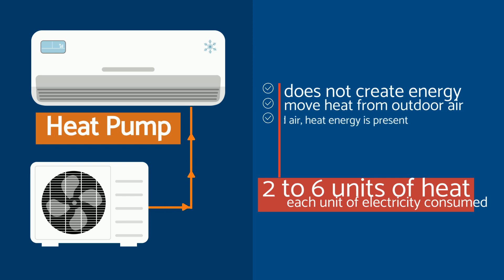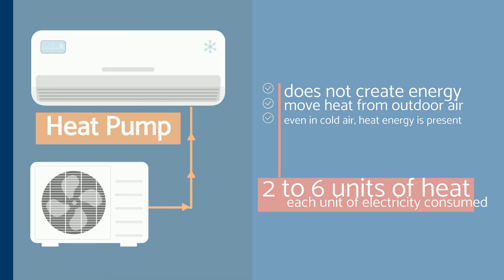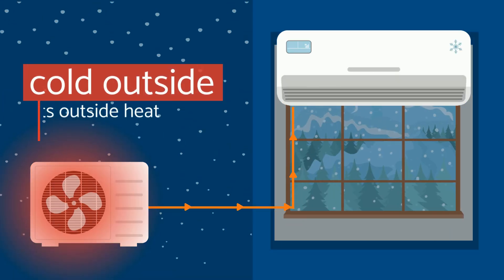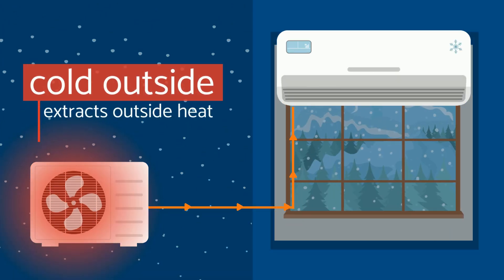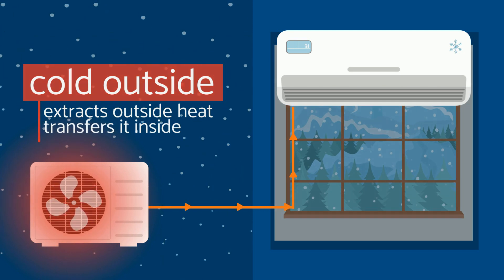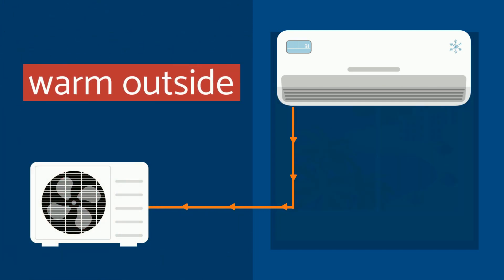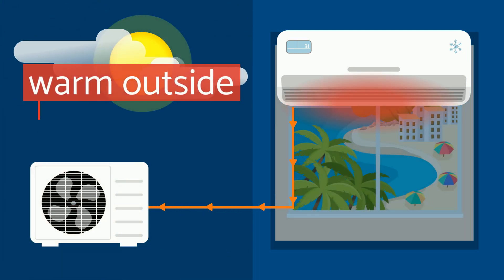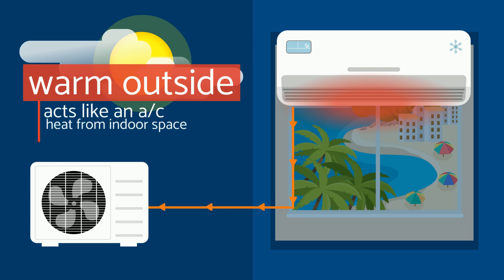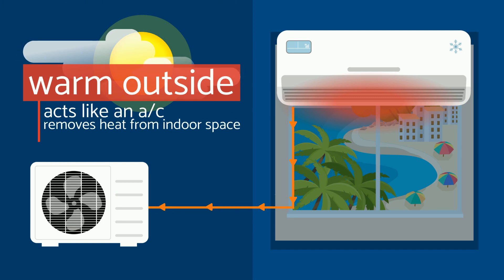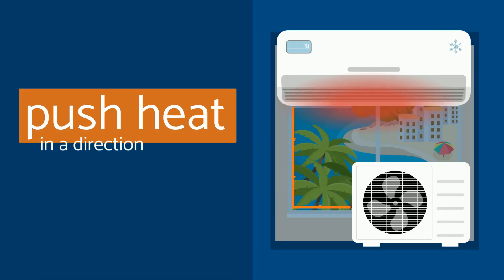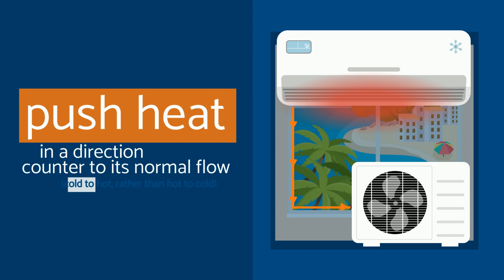Even in air that seems too cold, heat energy is present. When it's cold outside, a heat pump extracts this outside heat and transfers it inside. When it's warm outside, it reverses directions and acts like an air conditioner, removing heat from your indoor space. It pushes heat in a direction counter to its normal flow.